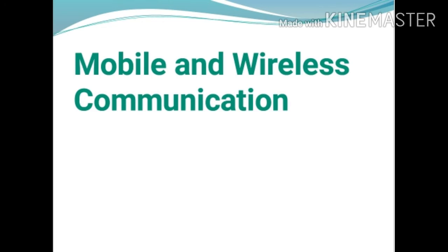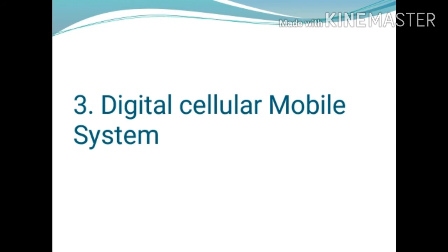This is the third chapter of Mobile and Wireless Communication Systems, covering digital cellular mobile systems. In this topic we see different mobile radio standards like GSM, IS-95 CDMA, and Signaling System Number 7. First is GSM, that is Global System for Mobile Communication. We will see the features and services related to GSM, GSM radio aspects, GSM architecture, GSM channel types, security aspects of GSM, and GSM call routing including mobile terminated and mobile originated call sequences.